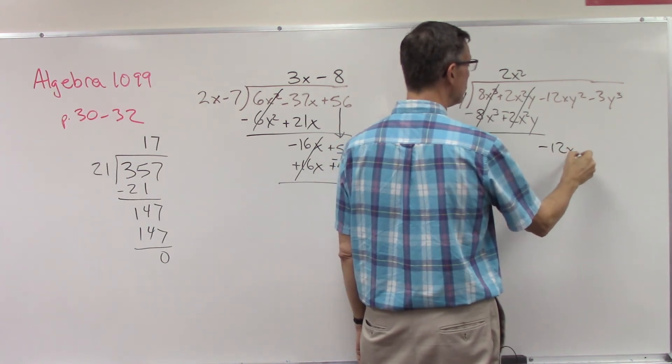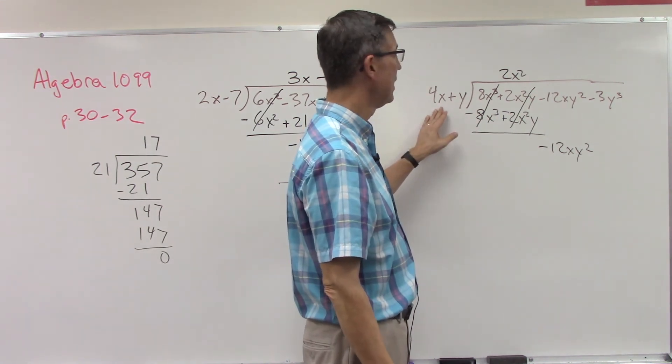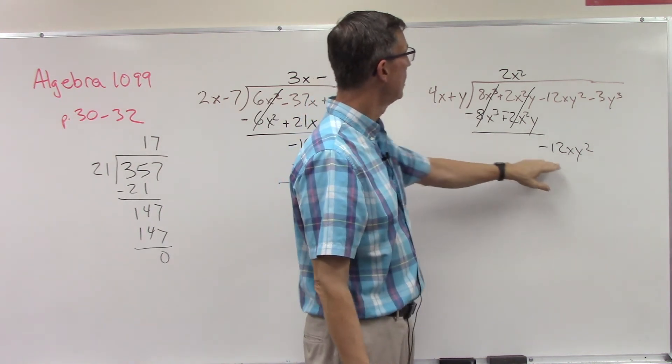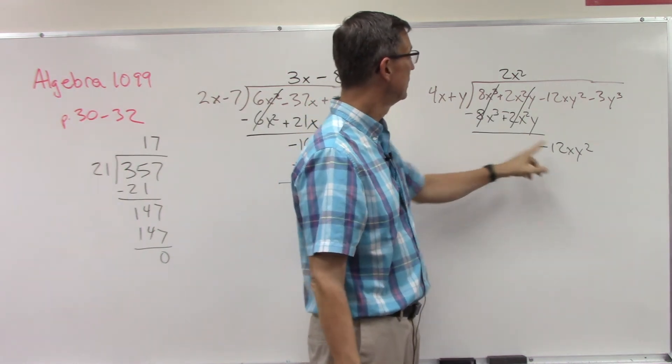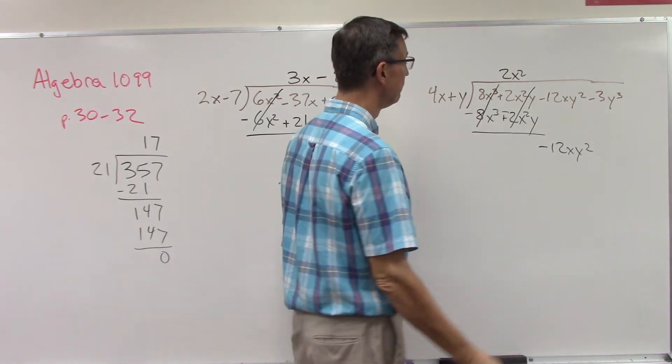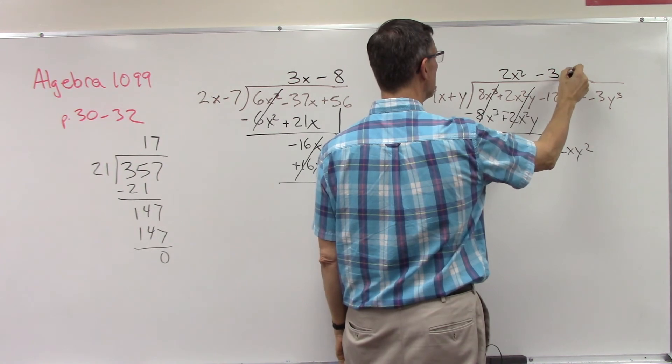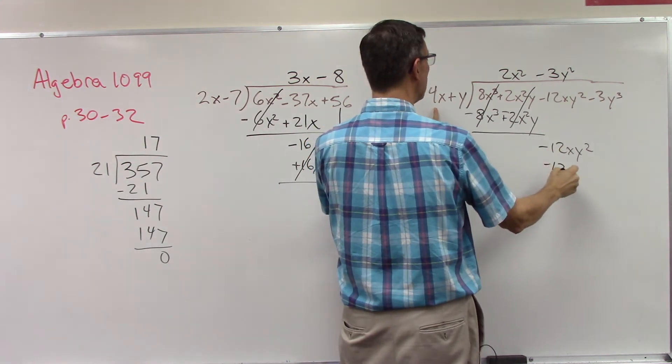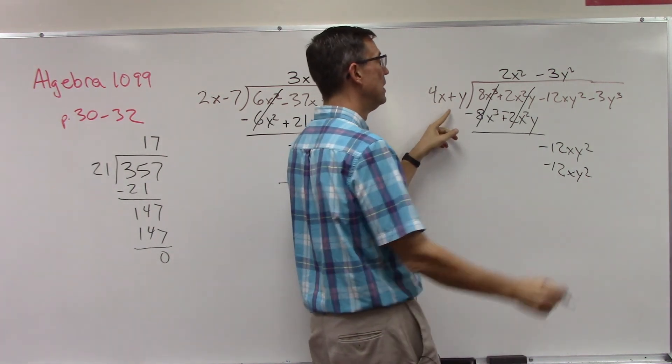And I'm going to take that and divide by 4x. Well let's see what that would be. Negative 12 divided by 4 is negative 3, x divided by x it's gone, and so I'll need the y squared. So negative 3y squared. Now let's check it by multiplying this times this. Negative 3 times 4x is negative 12xy squared. Good, I got the same thing back again.